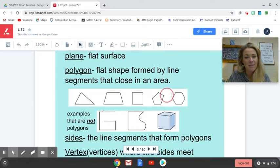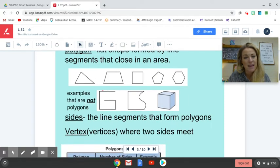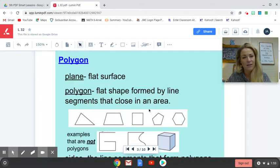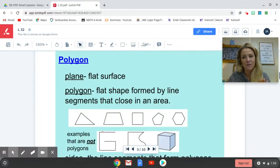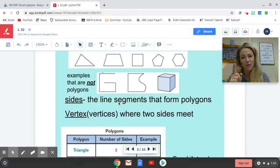Here are some examples of polygons right here. These are all formed by straight lines. These right here are examples of shapes that are not polygons. This one is not a polygon because it is not enclosed. This one is not a polygon because it has a curved line. And this cube right here, not a polygon because it's 3D. We're talking about a plane, flat surface, 2D, not 3D.